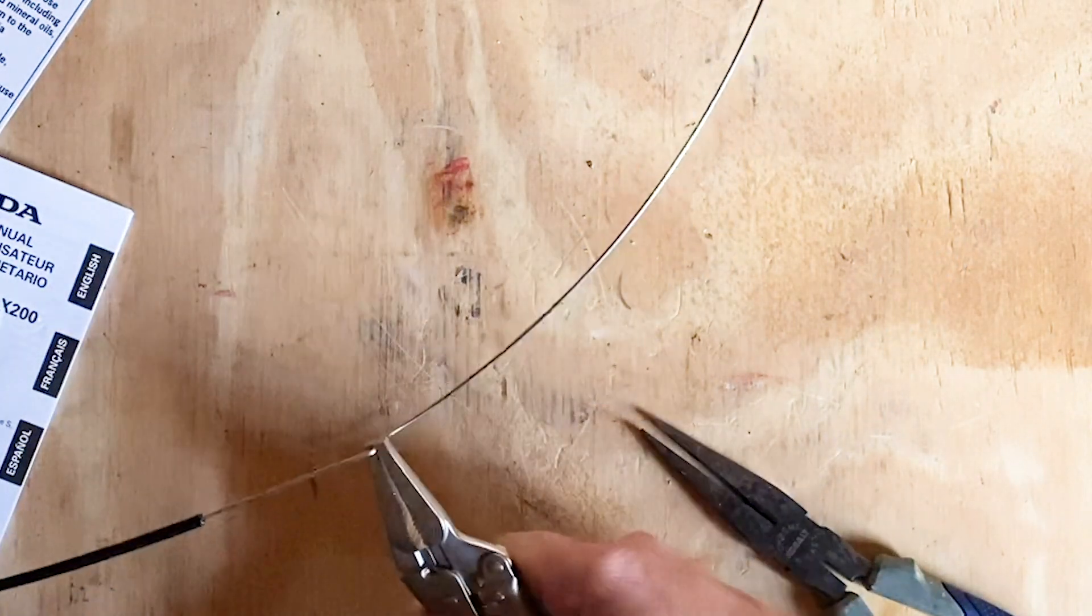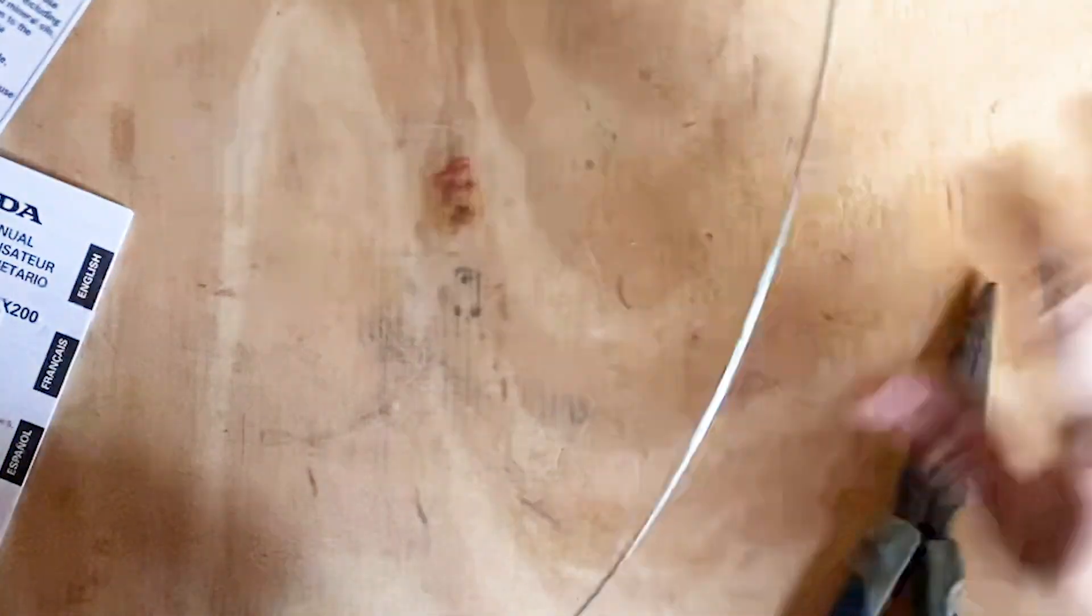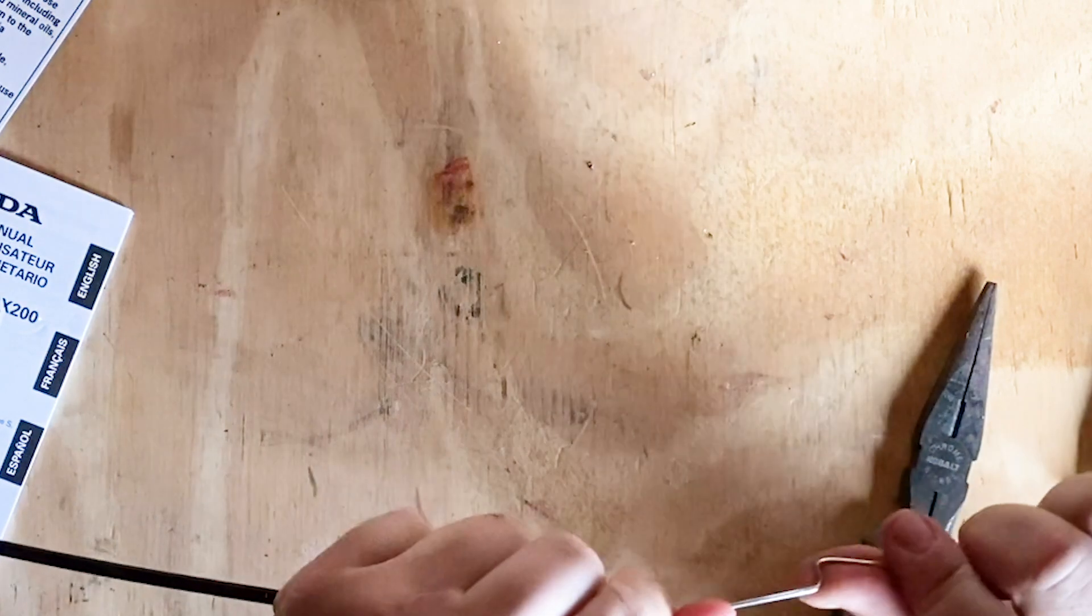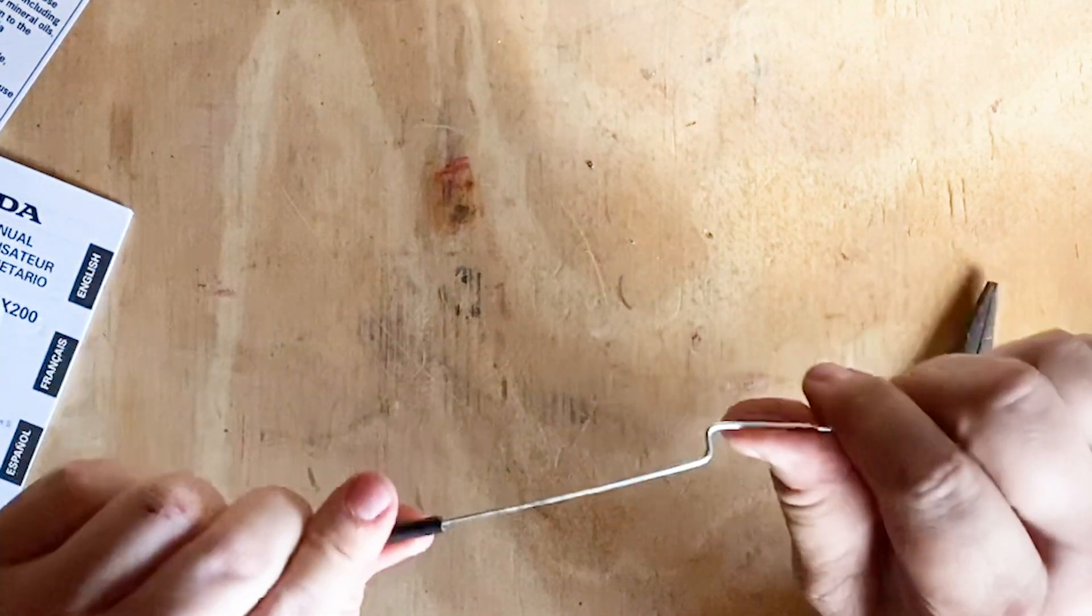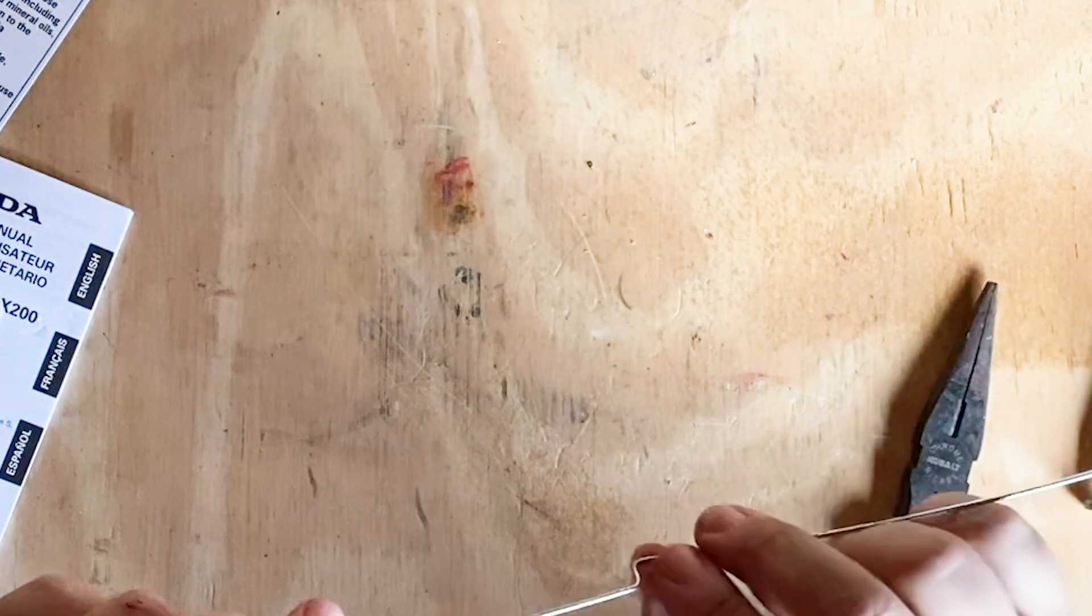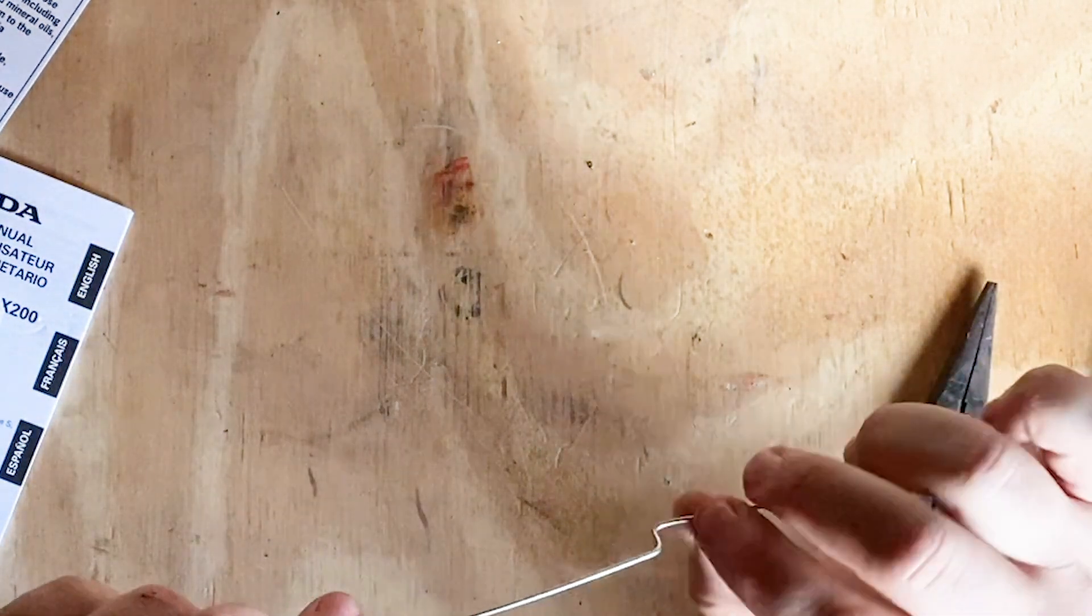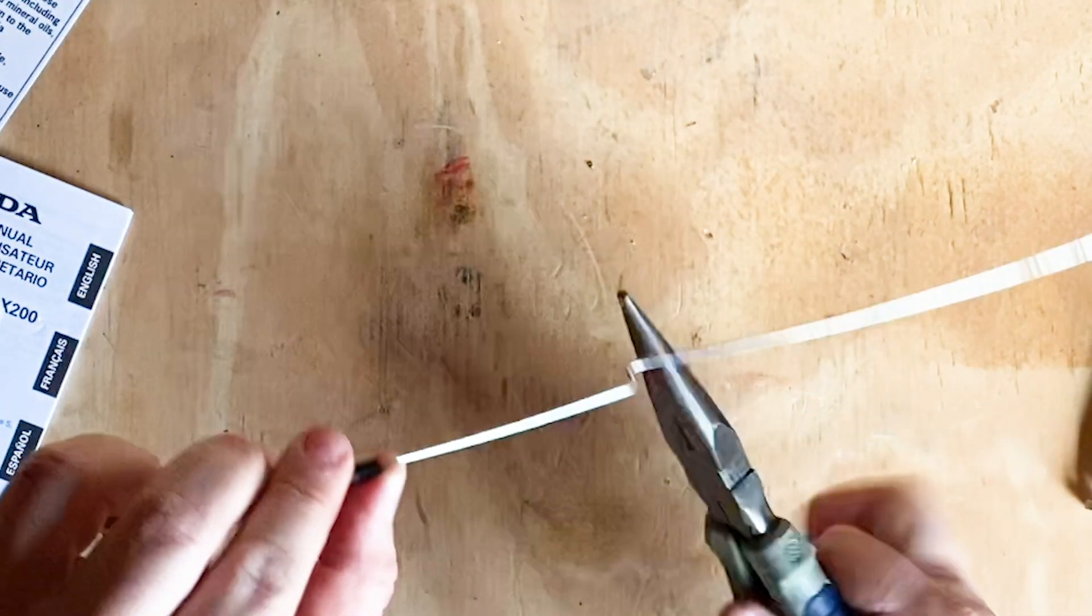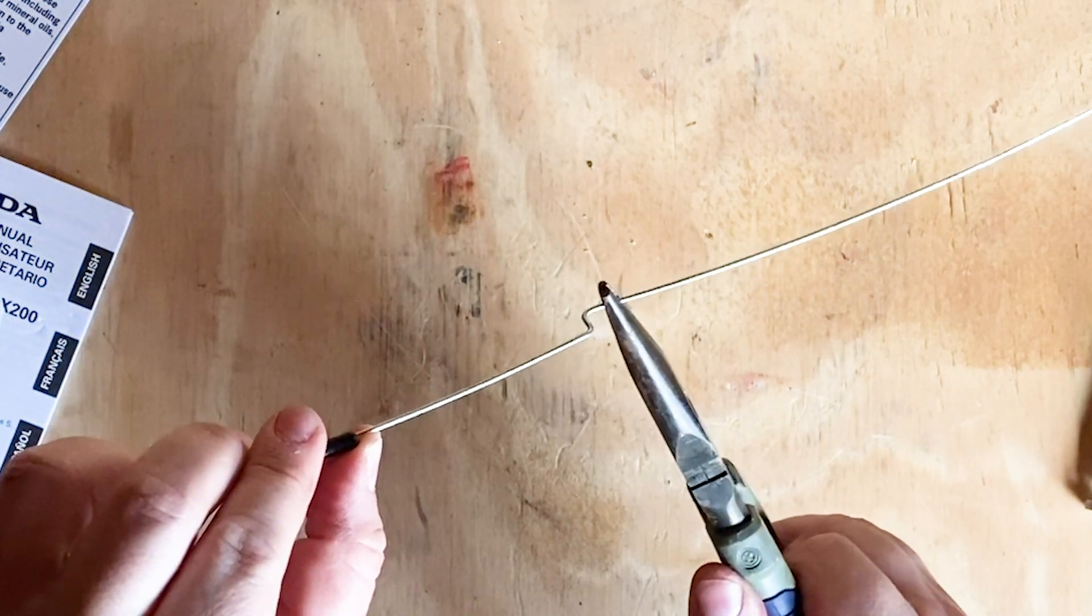So now you should have a Z bend in your throttle cable like this and you can straighten out your bend but that's what you're trying to create right there. Now go back and check it and if everything looks good you can trim it off right there. So I'm going to go check mine.